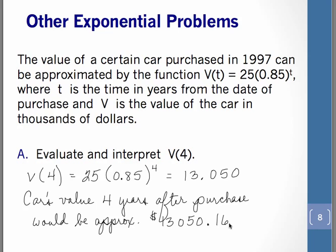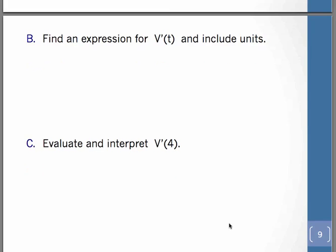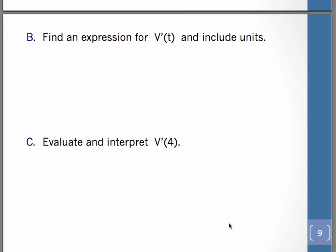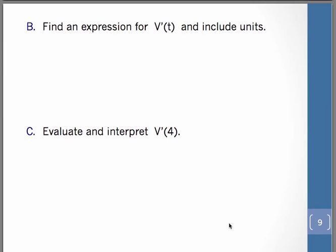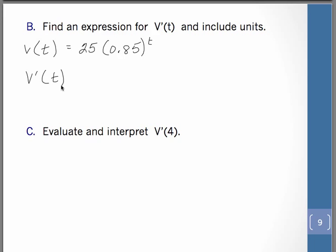So let's get more into the calculus. The next thing we're going to do is find an expression for v prime of t and include what the units of measure would be. So v of t was given to be 25 times .85 to the t. When we find v prime of t, the 25 as the coefficient simply remains. Then the .85 raised to the t — that's like doing the derivative of a to the t. So we're going to keep the .85 to the t, and we need to multiply by the natural log of .85. And of course the derivative of t is simply 1, so we don't really need that.